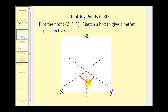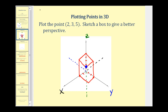Now we need to move up five units on the z-axis — this is where it gets a little tricky. We mark off five units on the z-axis, then construct a box: an edge parallel to the x-axis, edges parallel to the y-axis, and draw the top of the box. The point (2, 3, 5) is out two units along the x-axis, right three units along the y-axis, and up five units along the z-axis — located at the top corner of the box.